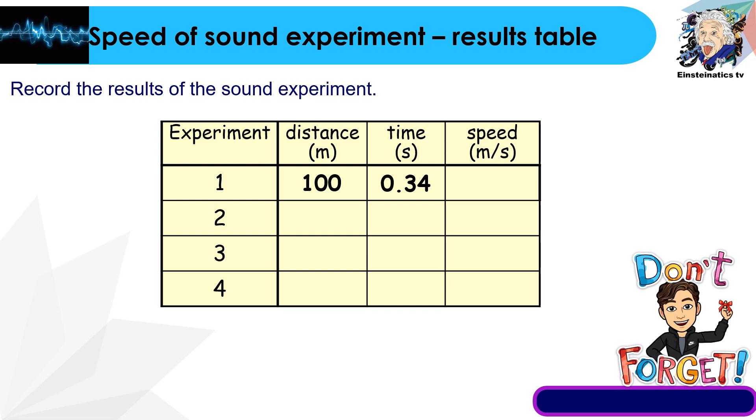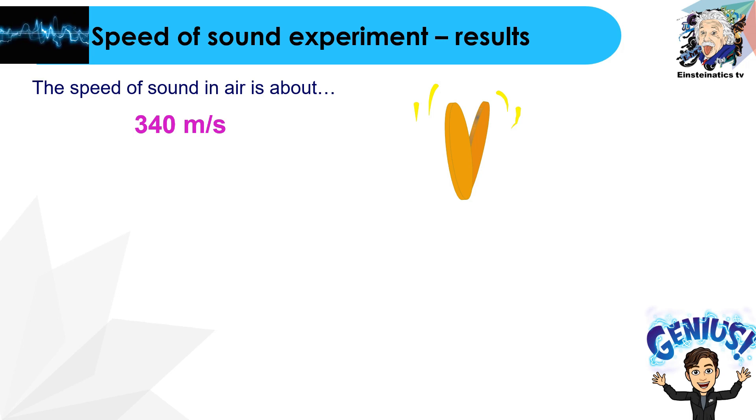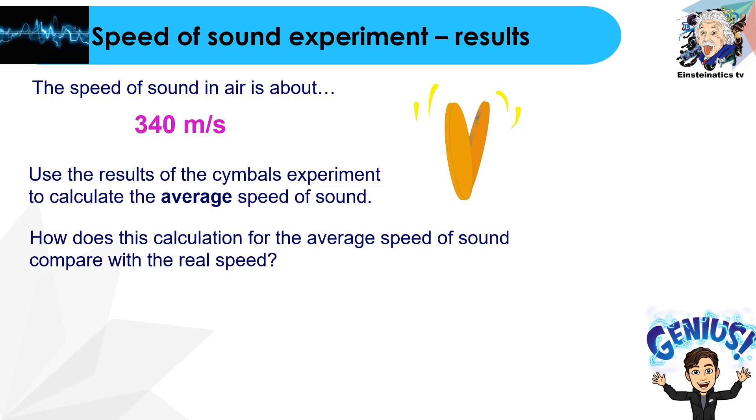After conducting the experiment, you record the results. So how do we determine the speed? You use the formula: speed equals distance over time. You are going to repeat it into four trials. The speed of sound is 100 divided by 0.34 seconds, so the speed of sound is 294 meters per second. What are the errors that could have affected the experiment and the results?